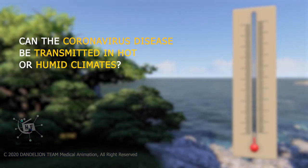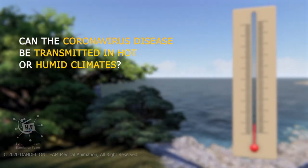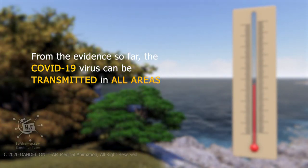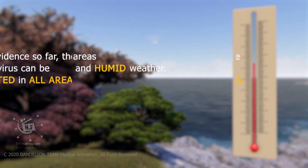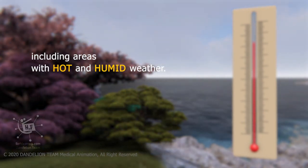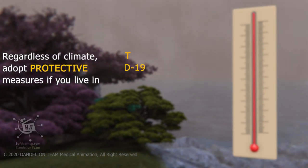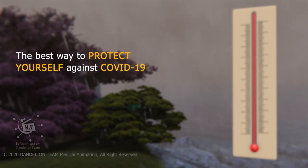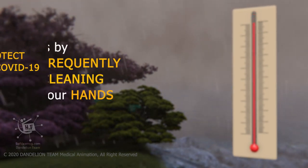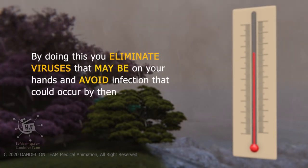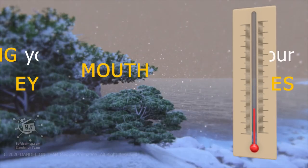Can the coronavirus disease be transmitted in hot or humid climates? From the evidence so far, the COVID-19 virus can be transmitted in all areas, including areas with hot and humid weather. Regardless of climate, adopt protective measures. The best way to protect yourself against COVID-19 is by frequently cleaning your hands. By doing this, you eliminate viruses that may be on your hands and avoid infection that could occur by then touching your eyes, mouth, and nose.